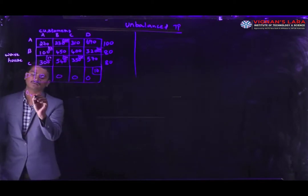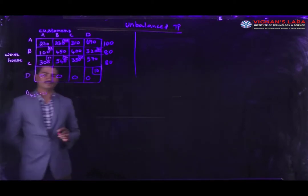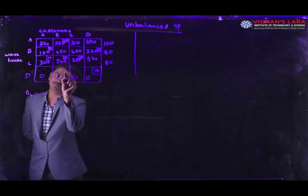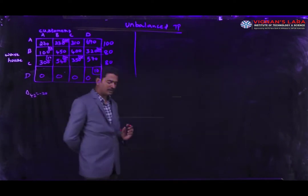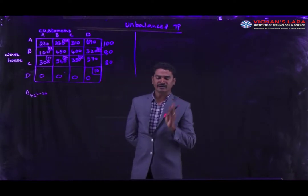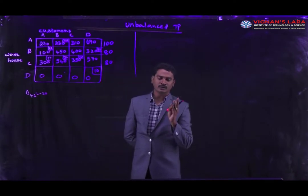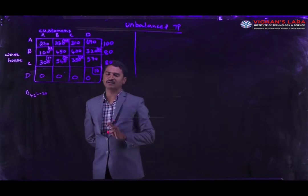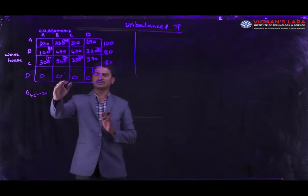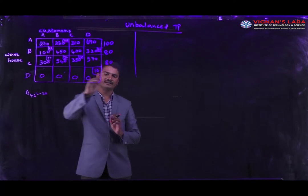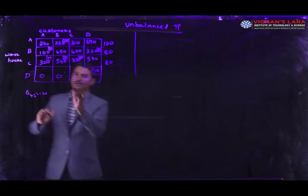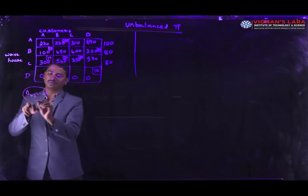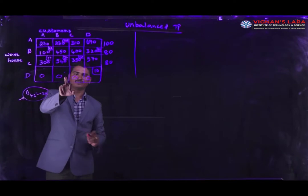At delta_42, we have the negative value of minus 20. From that cell, we are going to draw the loop. The rule for the loop is that its corners must cover allocations — if one corner is at the unallocated cell where we start, the remaining corners must be at allocated cells. We move only to the right hand side, not the left.